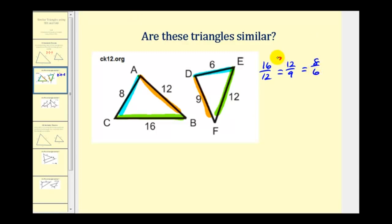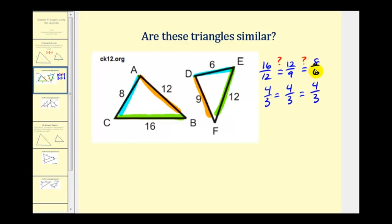Sixteen and twelve have a common factor of four, simplifying to four to three. Twelve and nine have a common factor of three, also giving four to three. Eight and six have a common factor of two, also giving four to three. All three ratios are equal, so the corresponding sides are proportional, and these two triangles are similar by side-side-side.